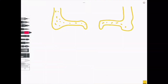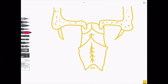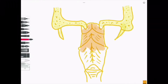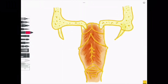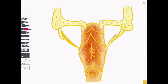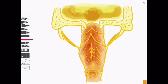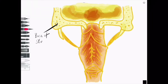Hello and welcome to the Sutton Brain Hub video on the pharyngeal muscles and their innervation. Here we can see the base of the skull from which the styloid process protrudes inferiorly.